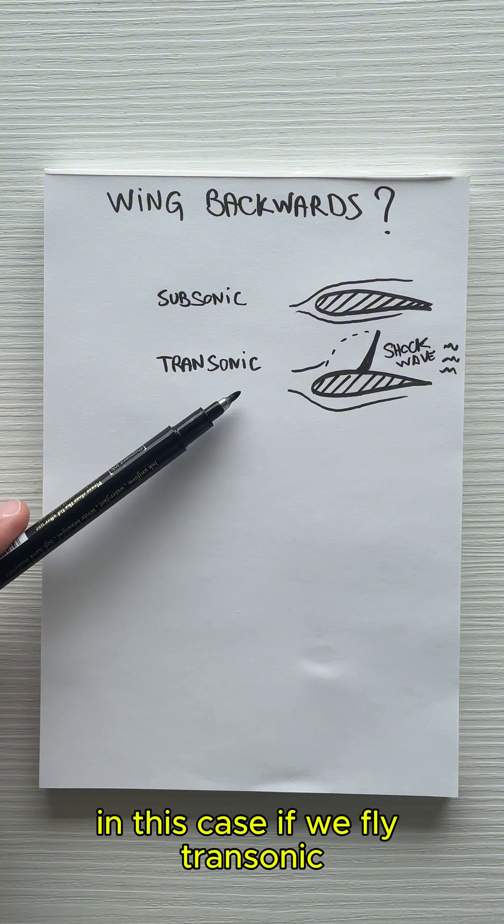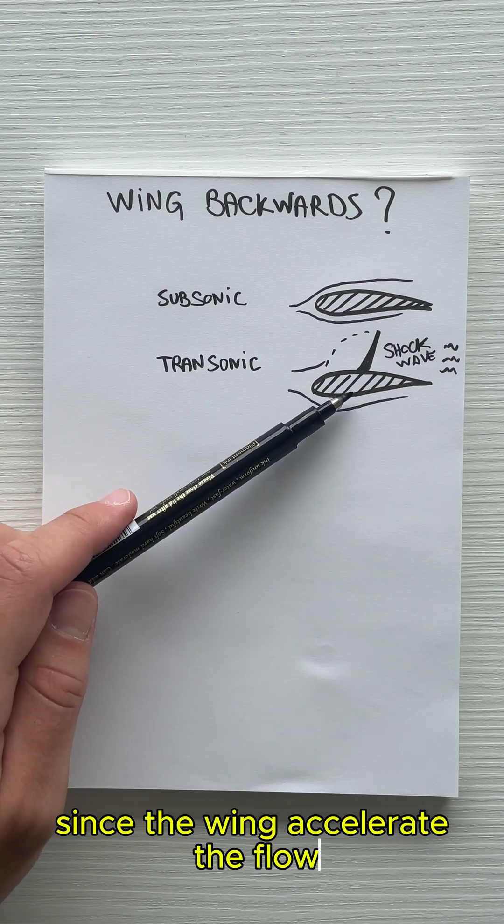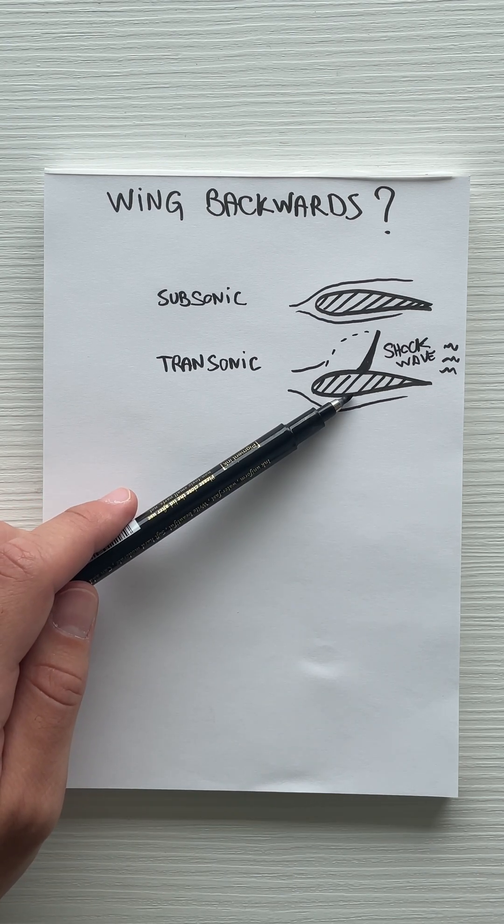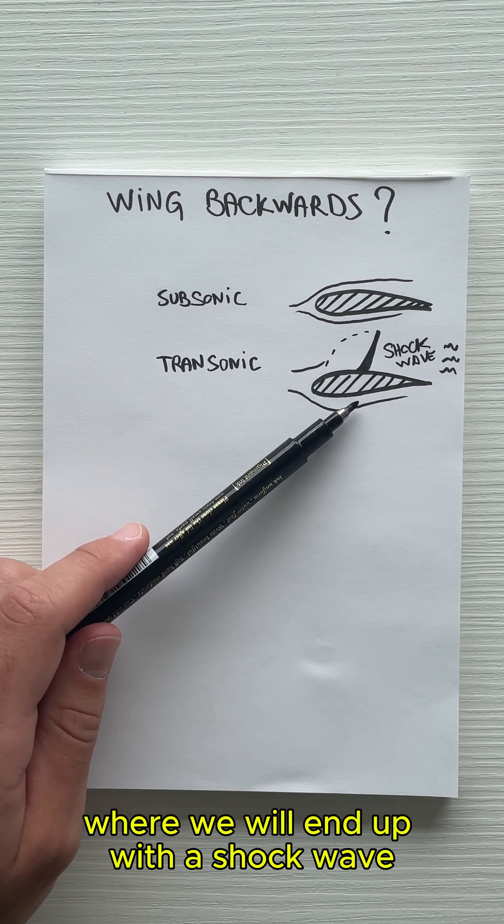In this case, if we fly transonic, that means that the flow here is lower than Mach 1, since the wing accelerates the flow, we will have a point around here where we will end up with a shockwave.